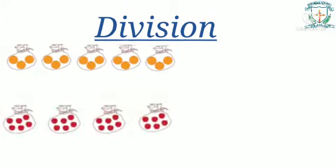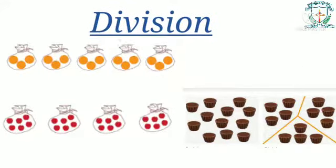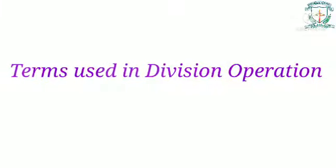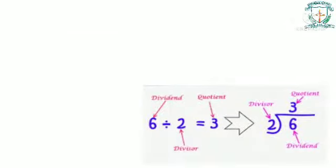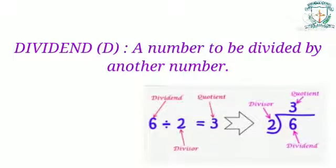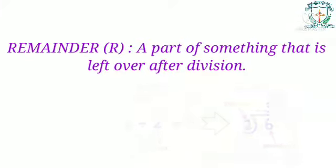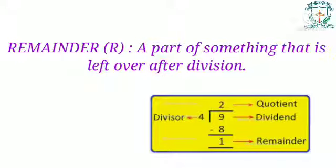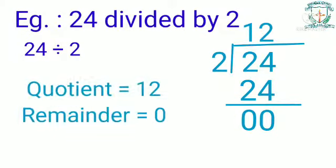Division: when we form equal groups out of a certain number or share something equally among a given number of groups, we divide. Let us understand the terms used in division. Divisor: a number by which another number is to be divided. Dividend: a number to be divided. Quotient: a result obtained by dividing one quantity by another. Remainder: a part left over after division. For example, 24 divided by 2 — here 2 is the divisor, 24 is the dividend, 12 is the quotient, and 0 is the remainder.